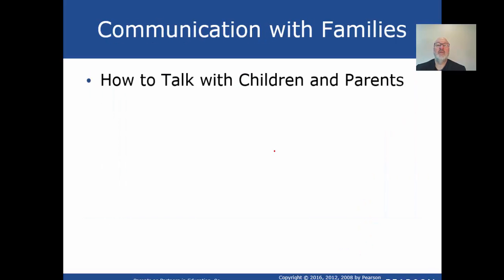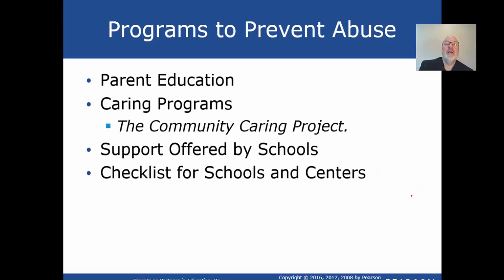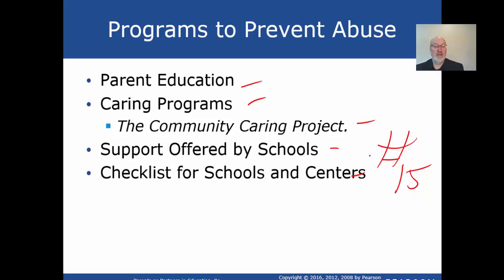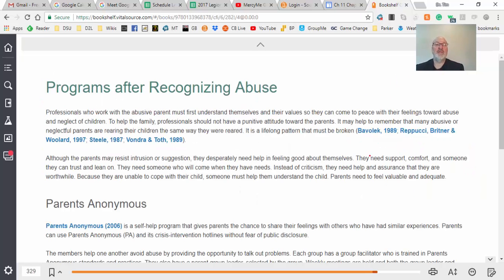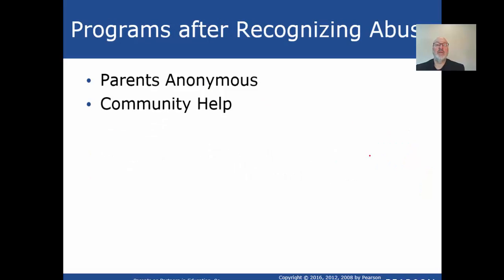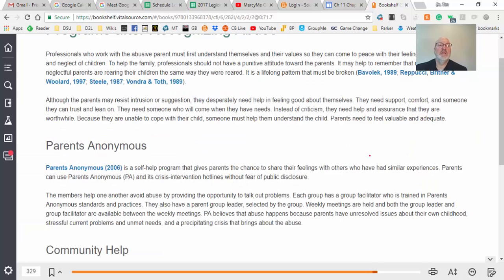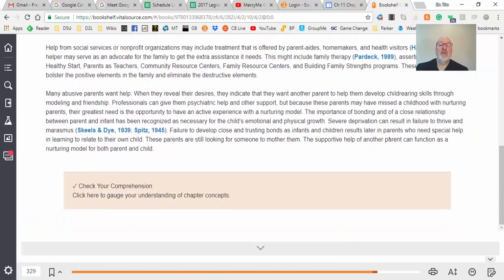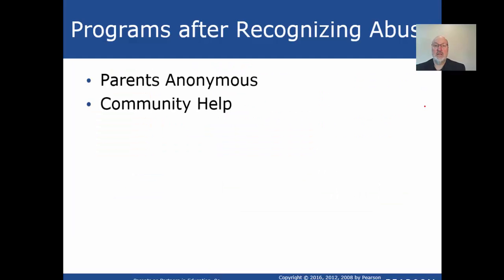Number fourteen covers how to talk to them — those were the clips. Number fifteen is parent education — give me something about those. The checklists I just clipped for you, and then programs for schools, parents, and community help. Talk about that briefly. That rounds out about sixteen items in your notes for this chapter.